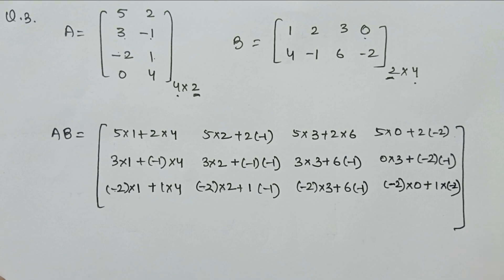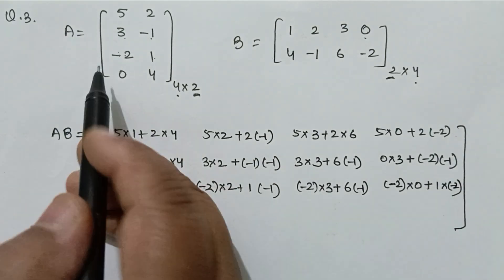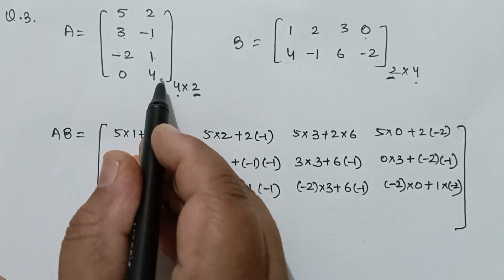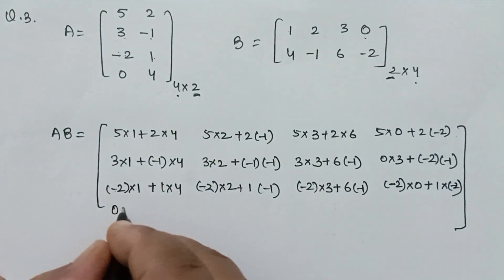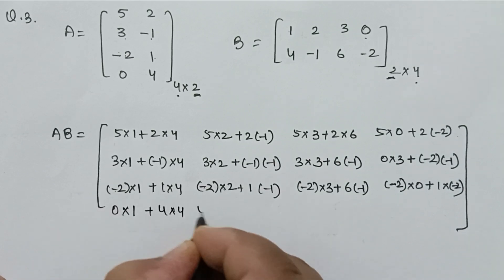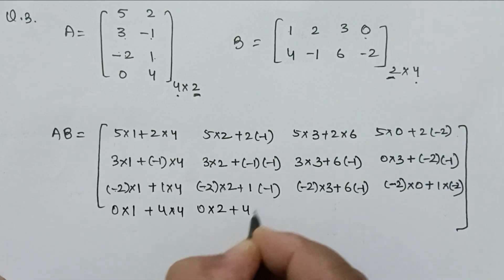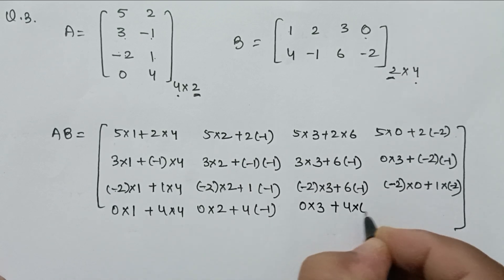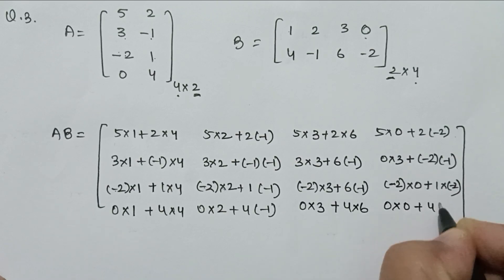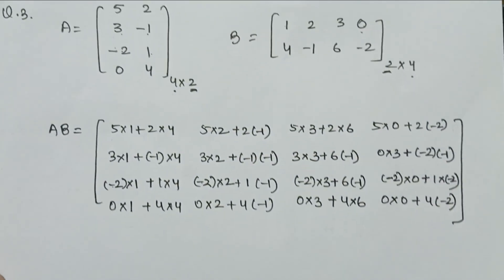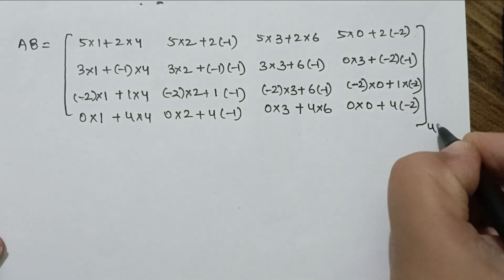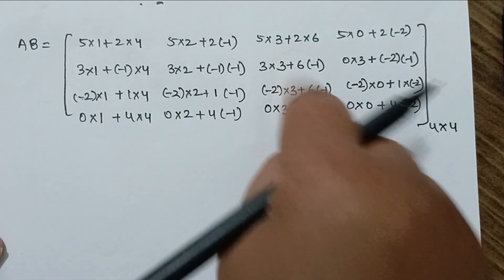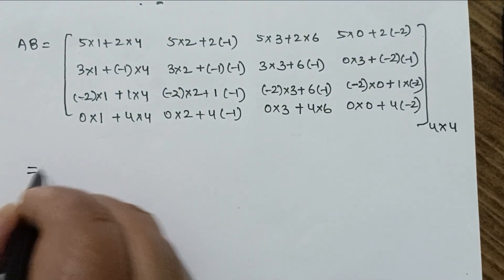For the fourth row, we use the 4th row of A with all columns of B. Fourth row, first column: 0×1 plus 4×4. Fourth row, second column: 0×2 plus 4×(−1). The order of the resulting matrix is 4×4, since the number of rows is 4 and the number of columns is also 4.